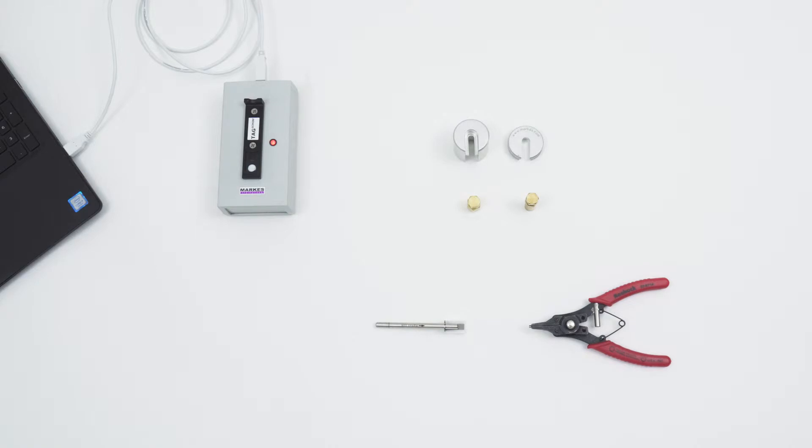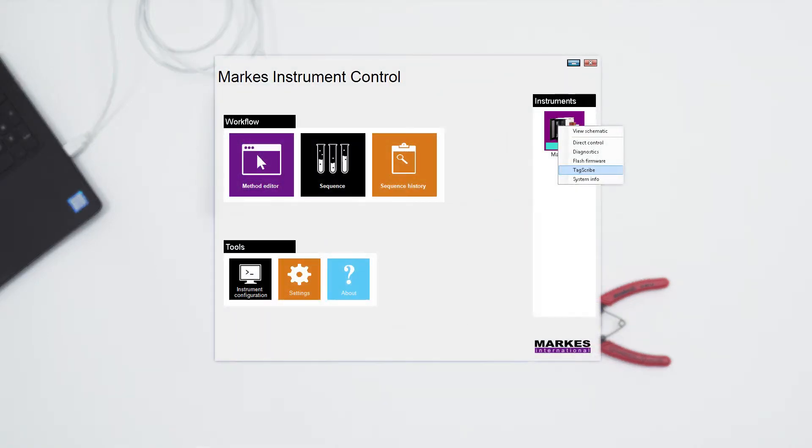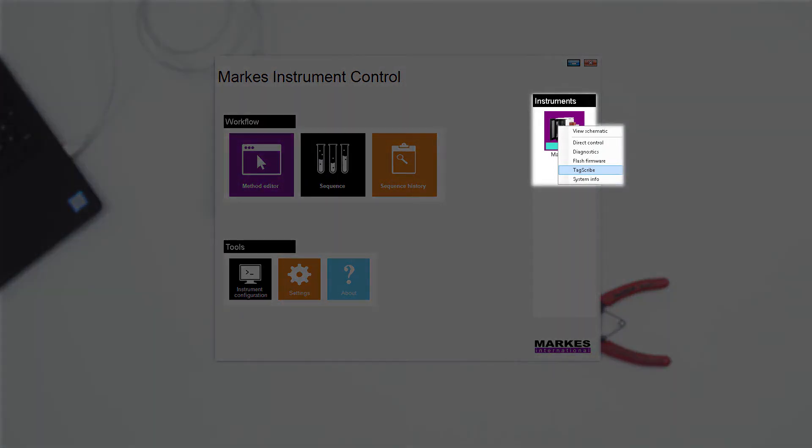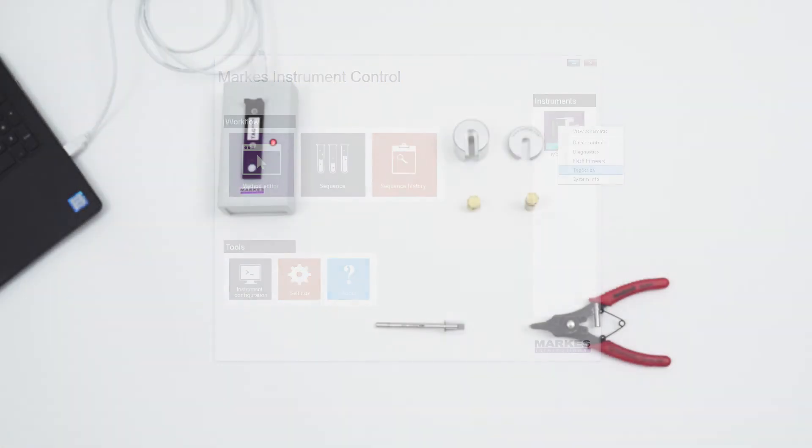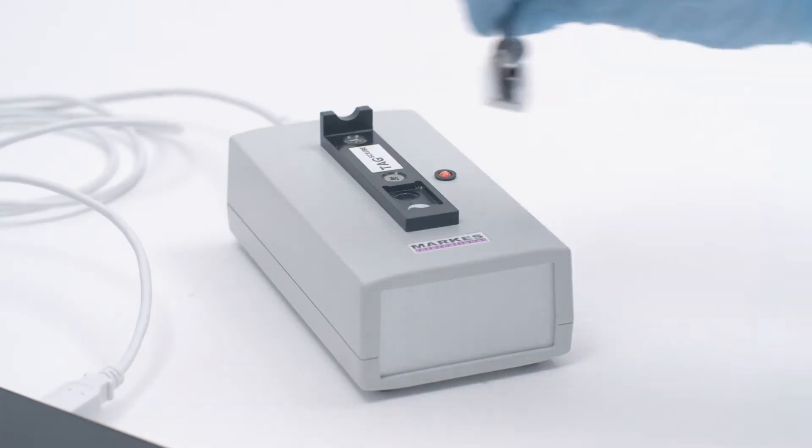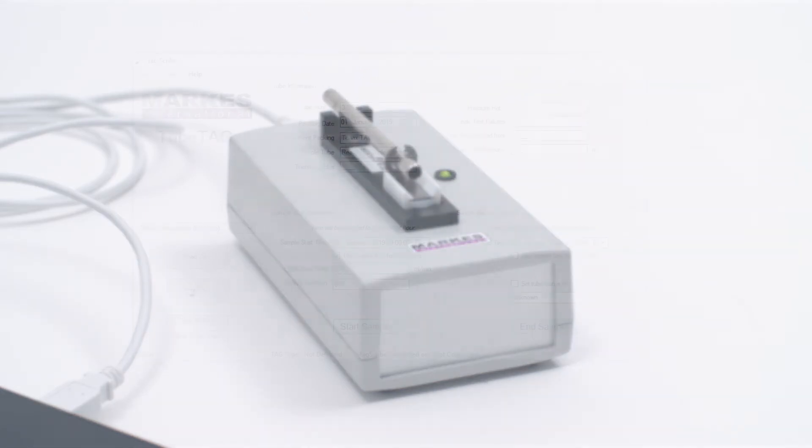You are now ready to write your tag. To do this, plug your TagScribe into a Windows compatible device or load the TagScribe windows in the MIC software by right-clicking on the Instruments tile. Launch the Tag software and load your tube either into the instrument or onto the TagScribe.